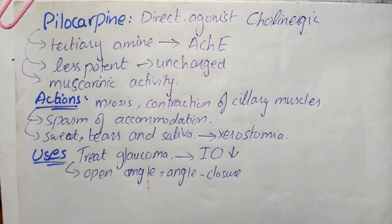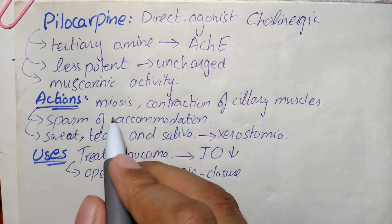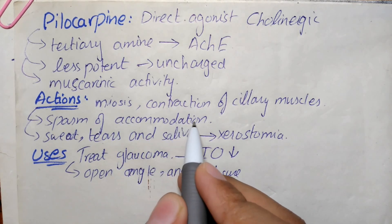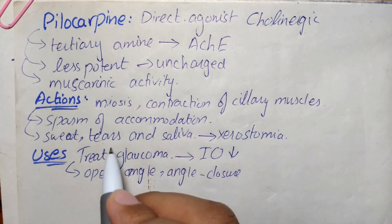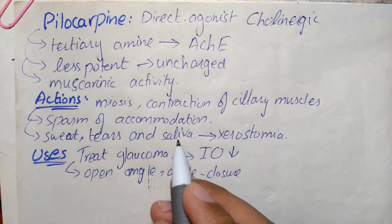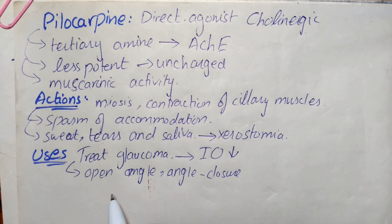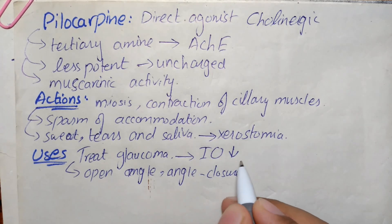It has muscarinic activity and is primarily used in ophthalmology. If we talk about its action, it can cause miosis when it is topically applied to the eye, and it also causes contraction of ciliary muscles. When the eye undergoes miosis, it experiences a spasm of accommodation. The vision becomes fixed at a particular distance, making it impossible to focus.